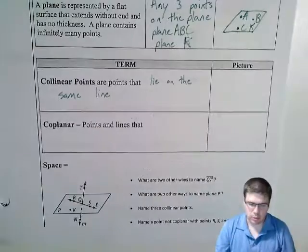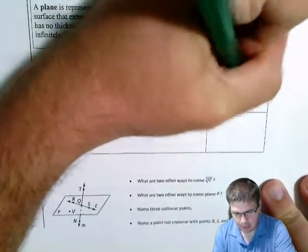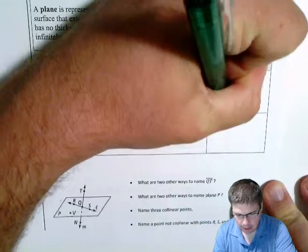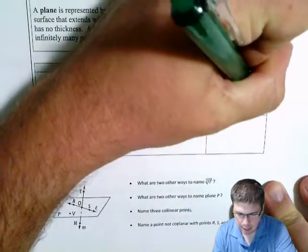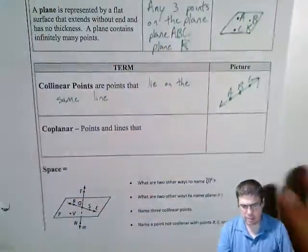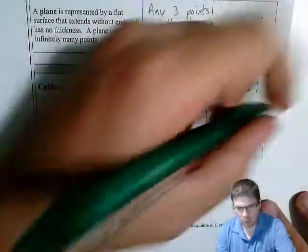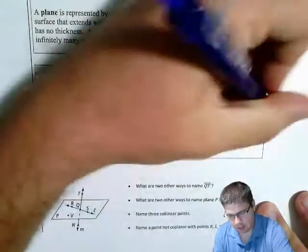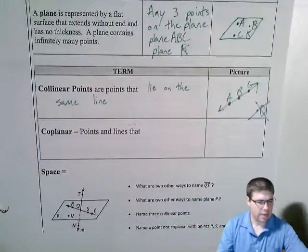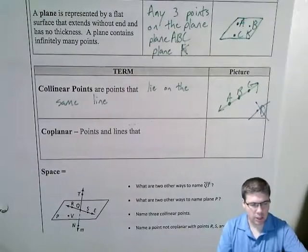And you can probably guess what coplanar means. But so for example, if I have a line here, A is collinear with B, is collinear with C, but would not be collinear with D, right? D would not meet the qualifications. D is not collinear. A, B, and C are collinear.